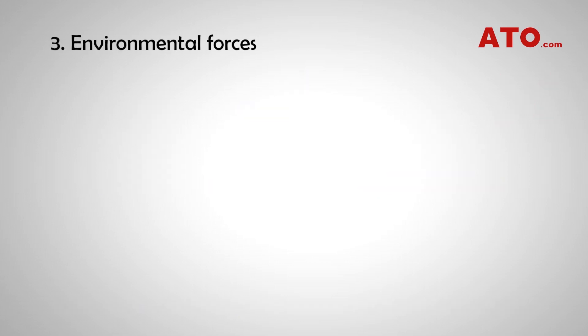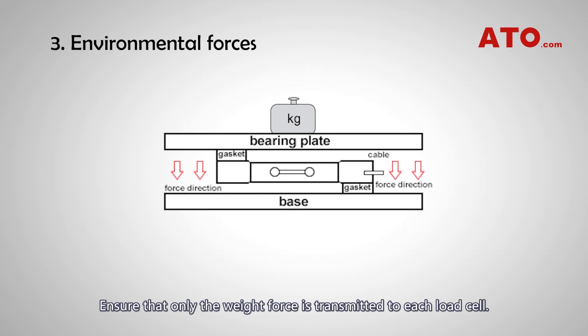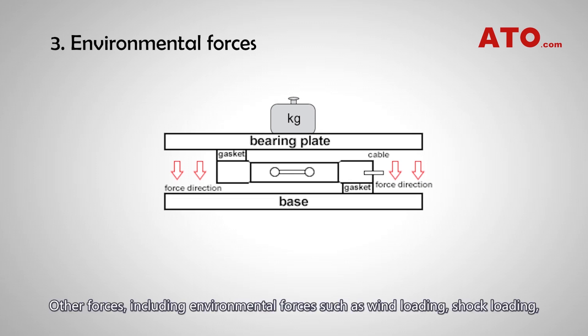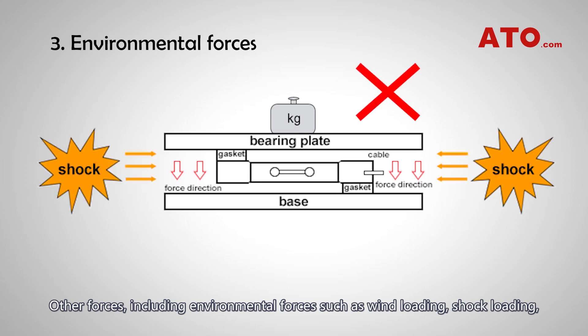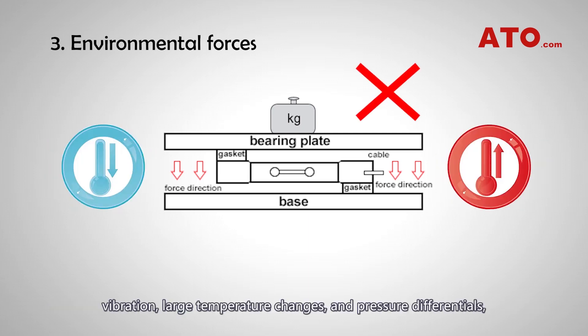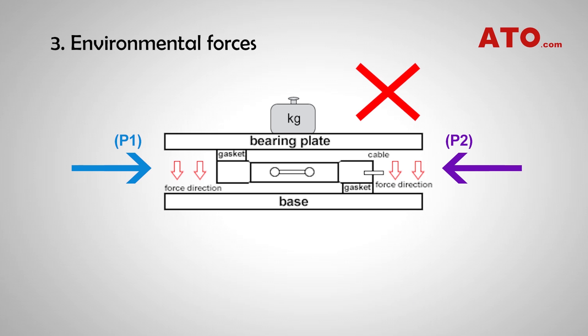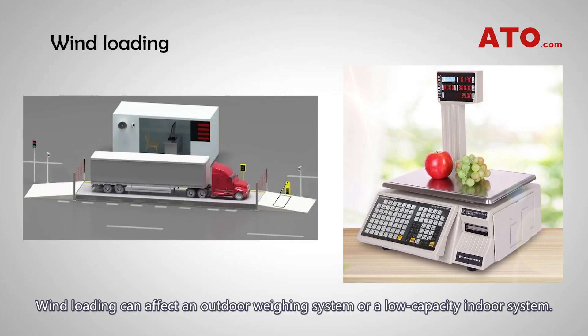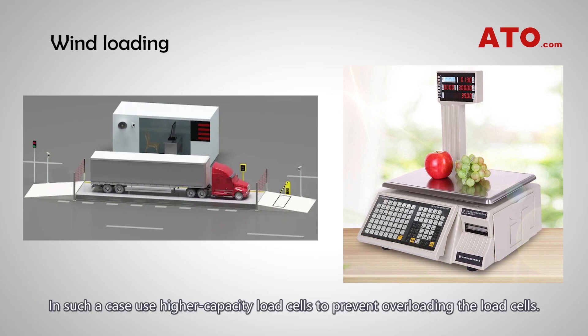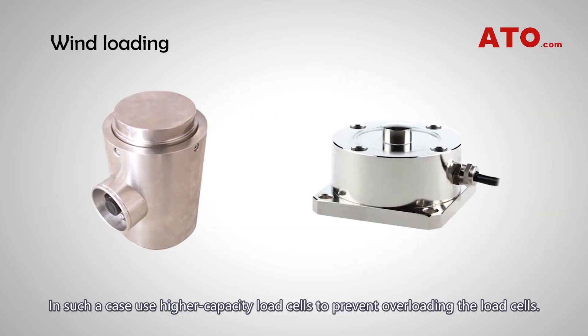Environmental forces. Ensure that only the weight force is transmitted to each load cell. Other forces, including environmental forces such as wind loading, shock loading, vibration, large temperature changes, and pressure differentials, can produce errors in the load cell signal. Wind loading can affect an outdoor weighing system or low-capacity indoor system. In such a case, use higher capacity load cells to prevent overloading.